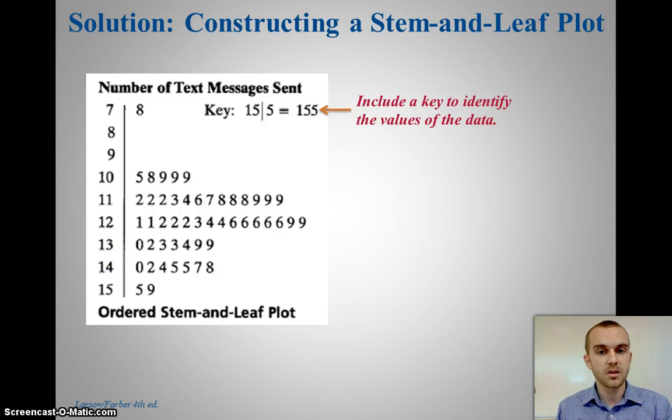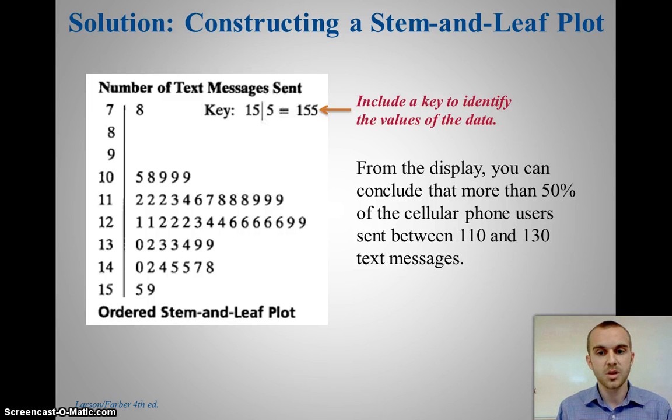If I have something like 130, I do put that 0 there. That's important. And the other thing I want to make sure to include is a key. Keys are very important to tell people what exactly is happening in your stem and leaf plot. So if I look at this display, I could conclude that more than 50% of cell phone users sent between 110 and 130 messages, this group right here. That's definitely more than half.